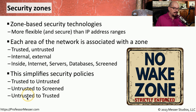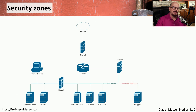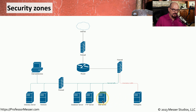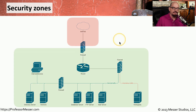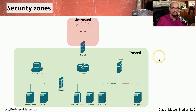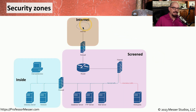In certain circumstances, there may be untrusted traffic that is allowed to move onto the trusted network. Here's how we might put these into practice. This is a network that has an internet connection on the outside, a firewall, and then a router that connects to the rest of the internal network, which includes mail servers, database servers, directory servers, and other internal devices. A very simple zone configuration might be everything on the outside as the untrusted zone and everything on the inside as the trusted zone. Here's a similar design using an internet zone, a screened zone, and an inside zone.